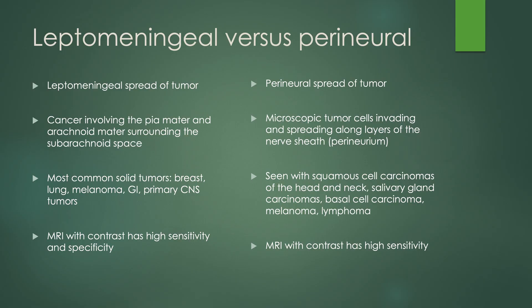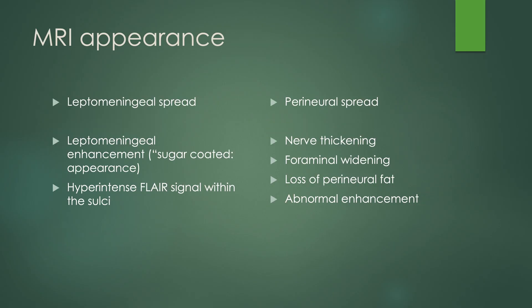As is the case with leptomeningeal spread of tumor, MRI with contrast has a high sensitivity — also greater than 70%. The MRI appearance of leptomeningeal spread of tumor is leptomeningeal enhancement. Some people call it a sugar-coated appearance of the surface of the brain and/or spinal cord. This also presents as hyperintense FLAIR signal within the sulci along the surface of the brain.